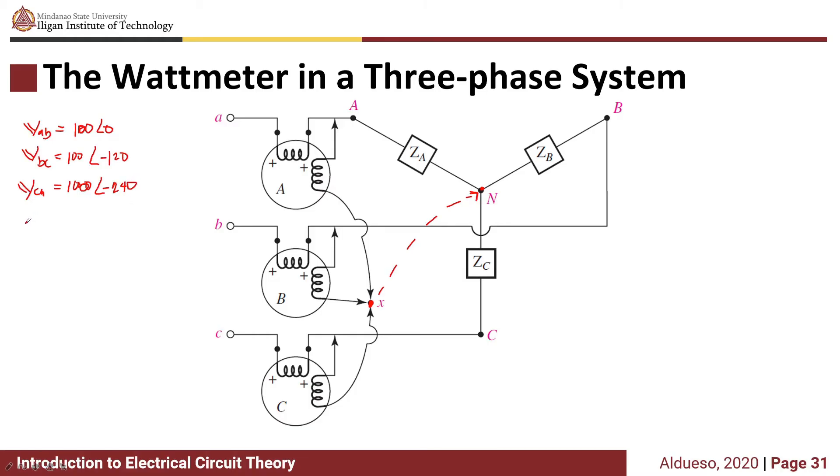So we have VAN = 100/√3∠-30°, VBN = 100/√3∠-150°.